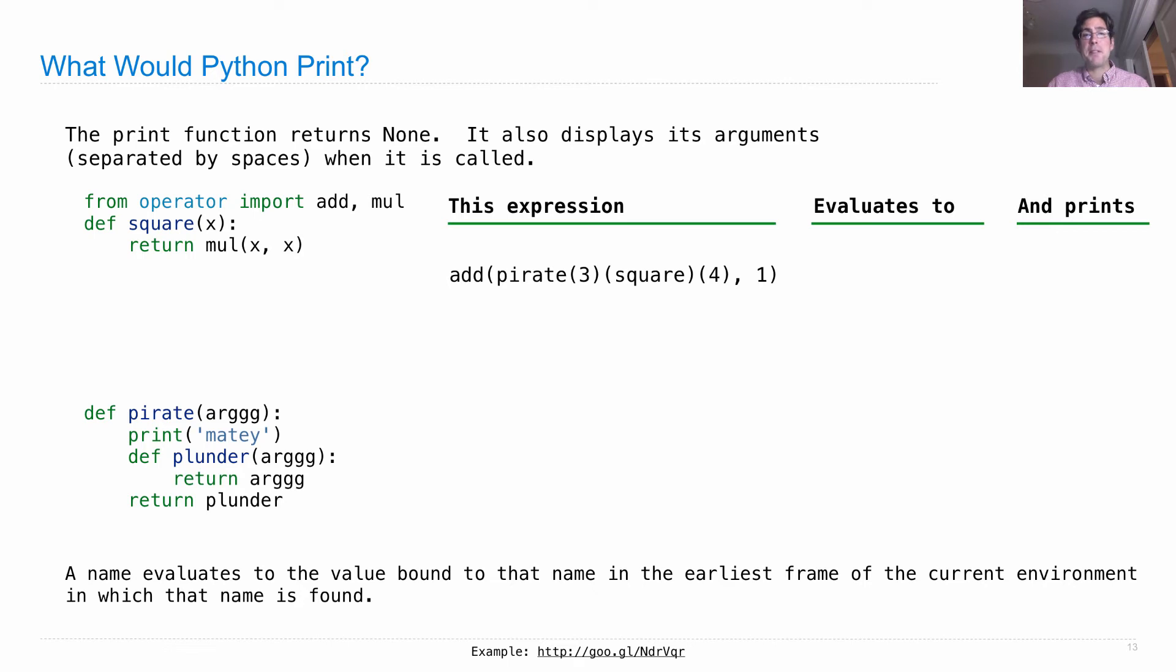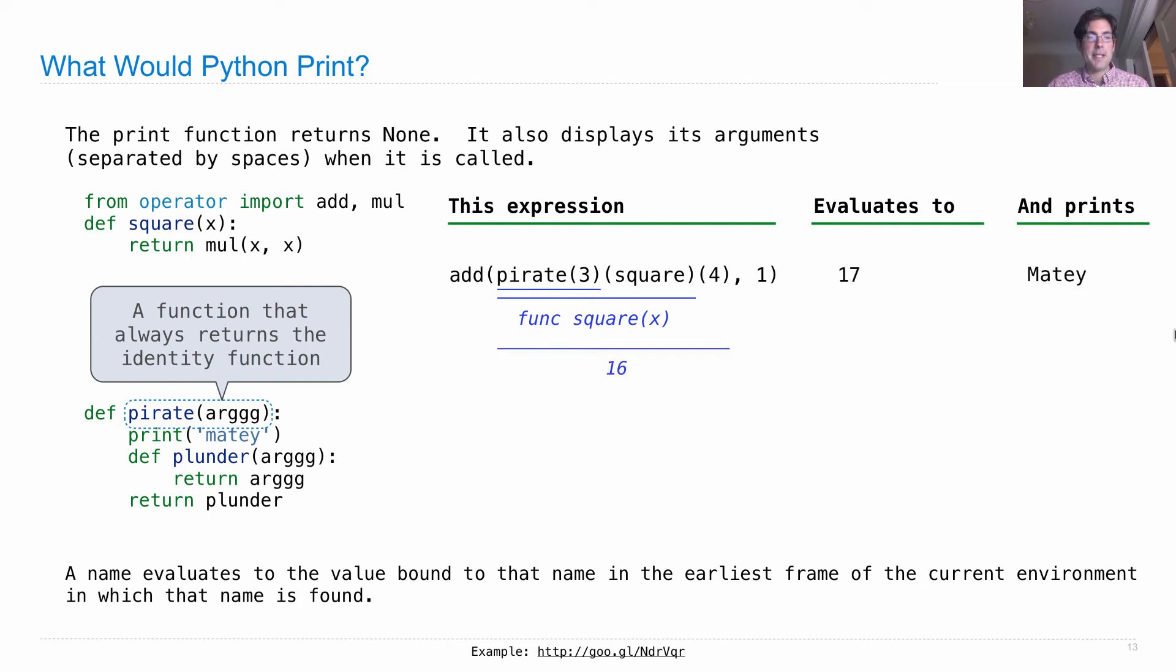The key thing to remember is that a name evaluates to the value bound to that name in the earliest frame of the current environment in which that name is found. The important thing to note is that when I return arg here, it will be this arg and not that arg, because this will be in the first frame of the environment of a call to plunder. We have a function called pirate which always returns the identity function, but it also prints matey along the way. plunder(arg) return arg is just a function that returns whatever's passed in. So when I pirate(3), I do print matey, but I get back the identity function. When I pass square to it, then it's going to evaluate to the square function. This whole thing is the square function, and if I square 4 I get 16, and add 1, I get 17, and it prints matey.